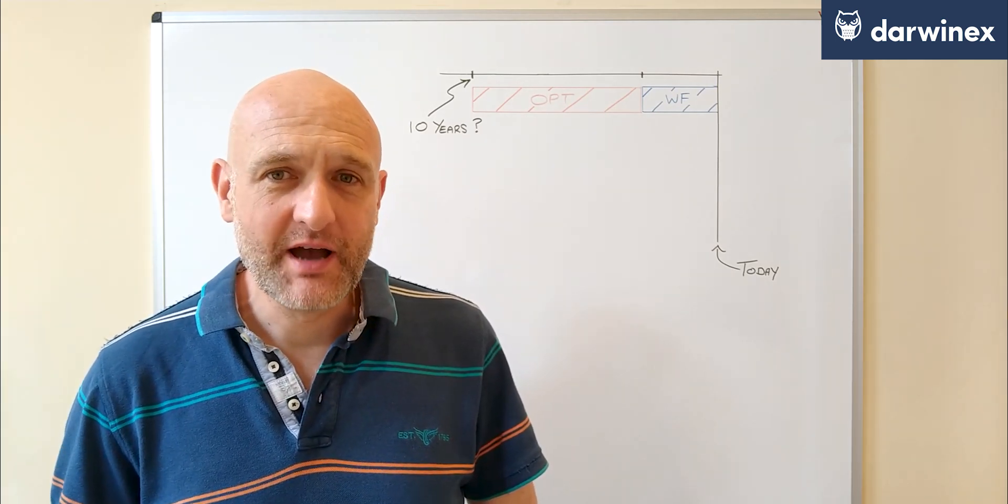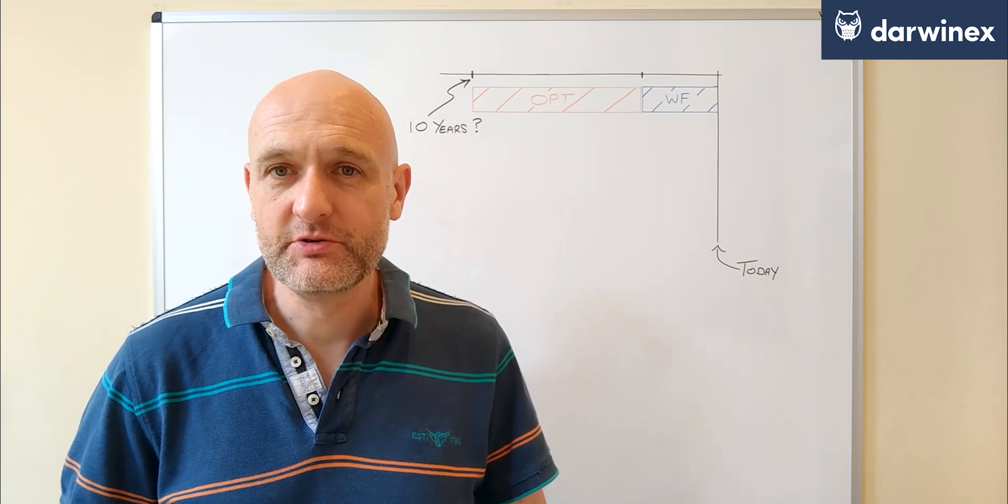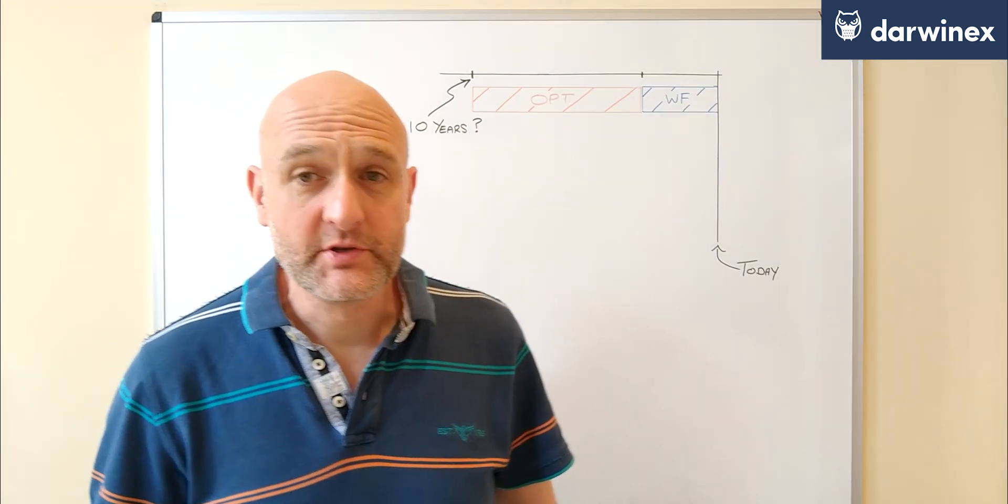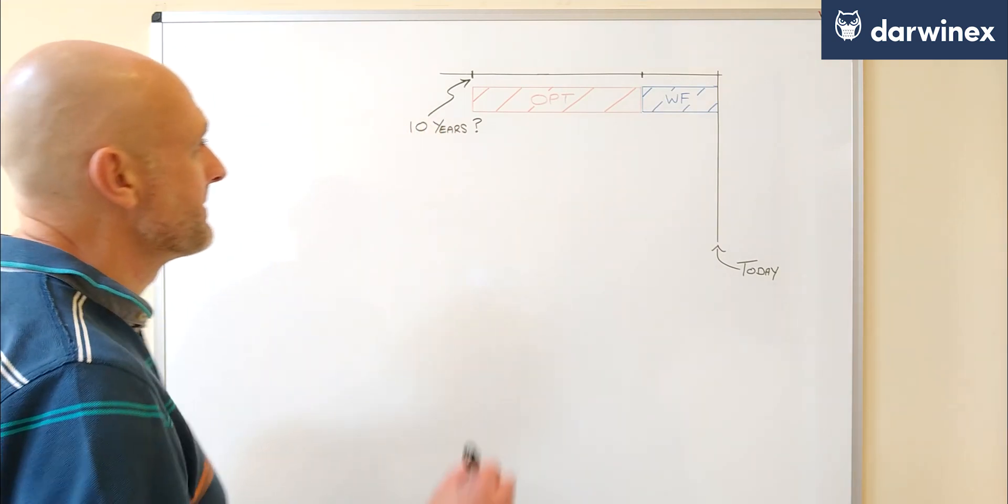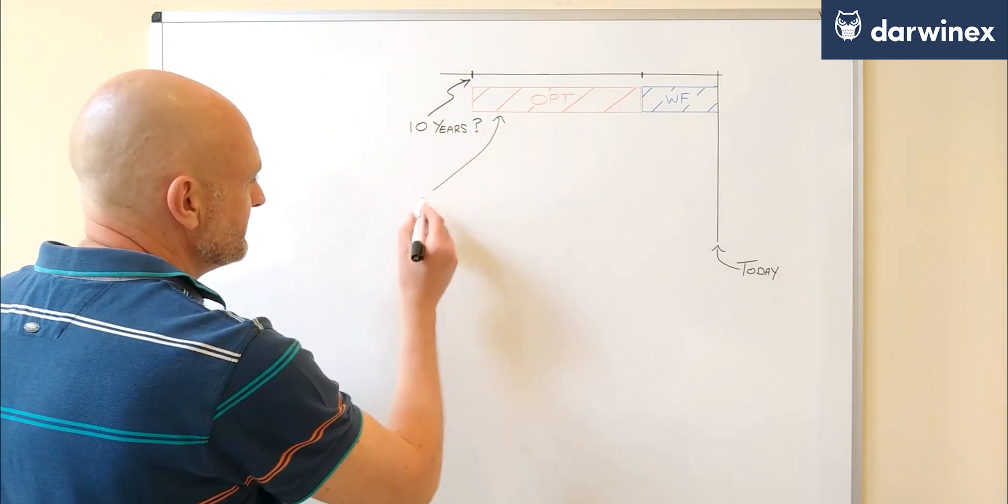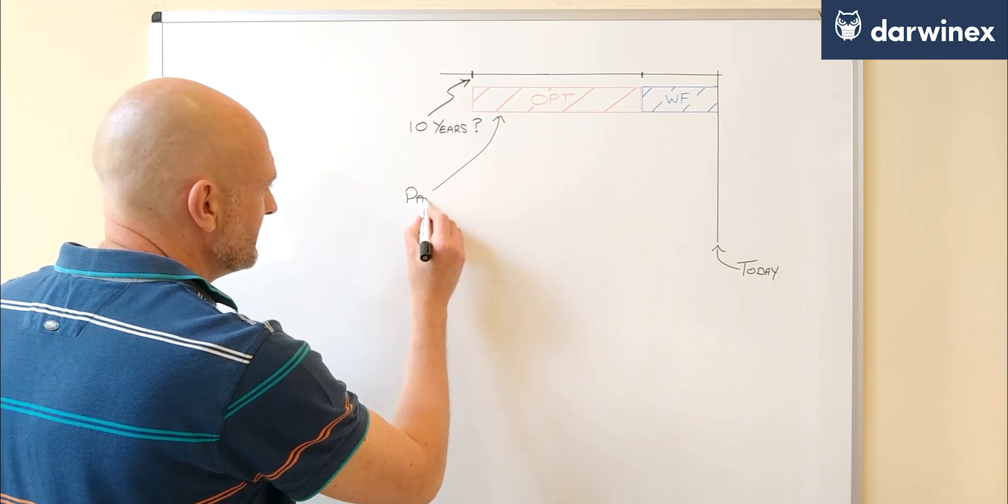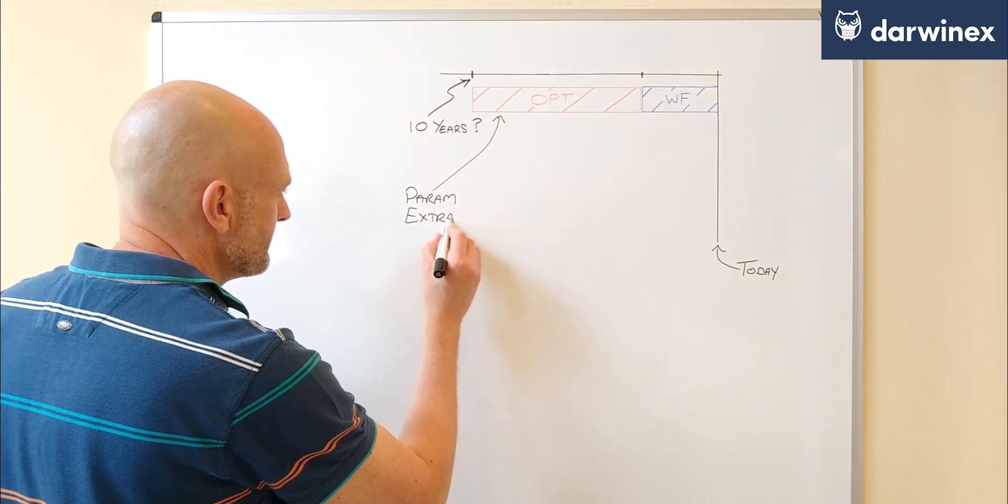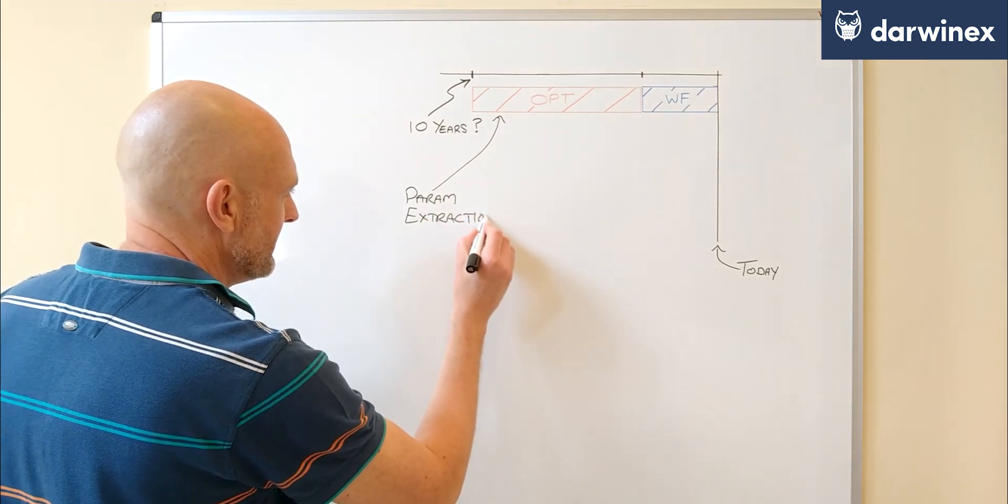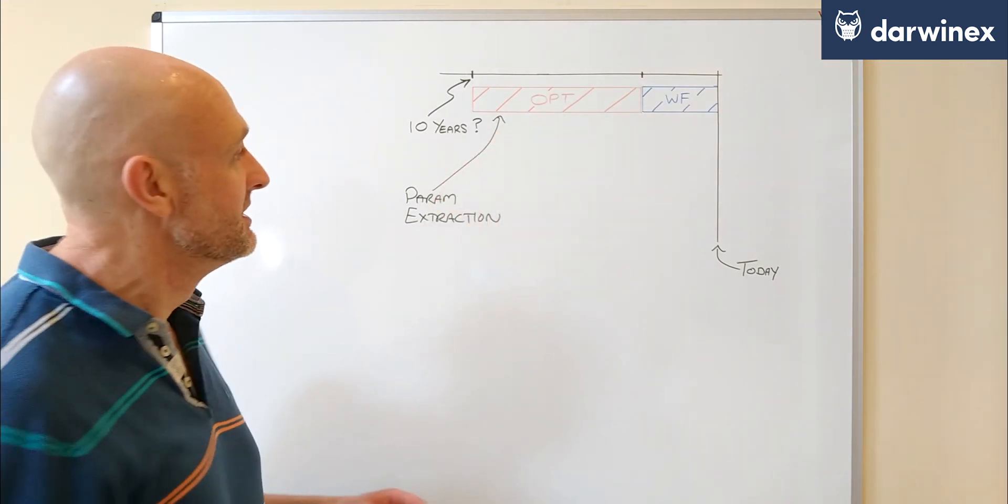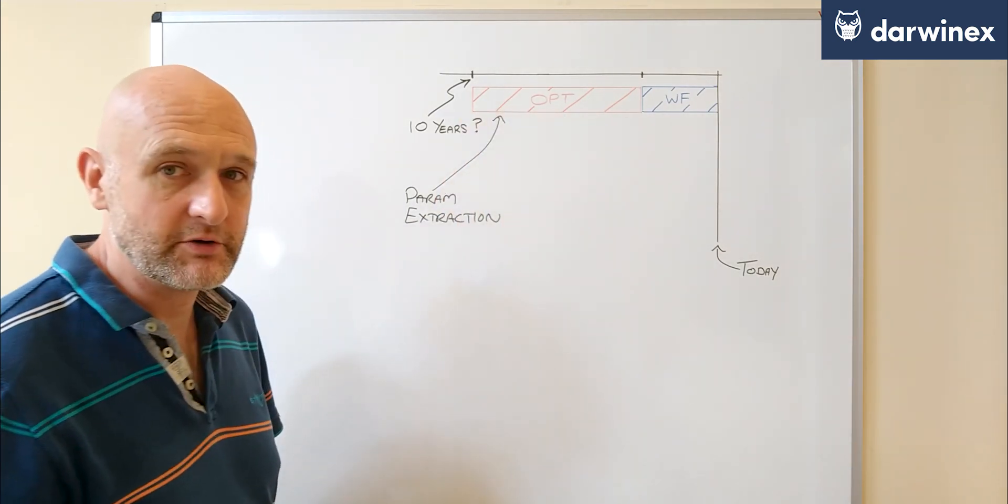But first let's remind ourselves about why we use two different phases in our backtesting process. So the purpose of each phase is very different. If we look at the optimization first, this is all about parameter extraction. In other words, extracting the best parameters from the optimization process.